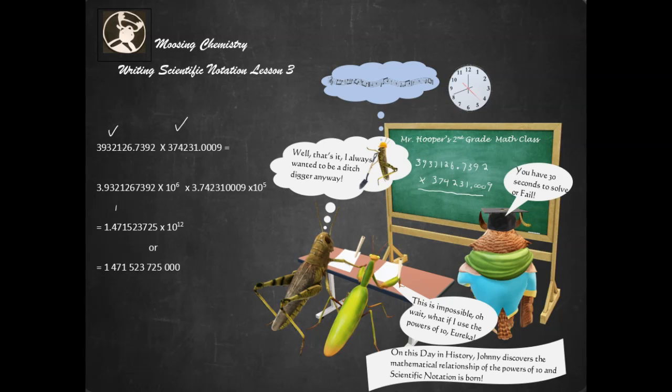So how do we avoid this? Well, we turn each number into scientific notation by using the powers of 10. That means we're going to be moving the decimals like over 1, 2, 3, 4, 5, 6. So that number would be written as 3.9321267392 times 10 to the 6.